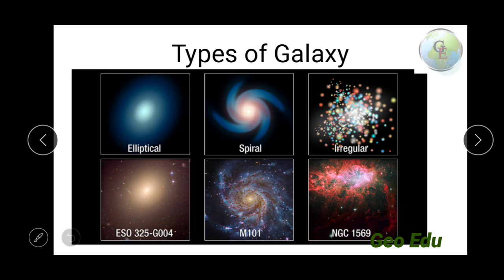Now I will tell about the types of galaxies. There are two types of galaxies. One is the normal galaxy. We are staying in a normal galaxy. Normal galaxies are three types: elliptical, spiral, and irregular. Our Milky Way galaxy is also a spiral galaxy. An example of an elliptical galaxy is shown here, and the Milky Way is one spiral galaxy. An example of an irregular galaxy is NGC 1569.